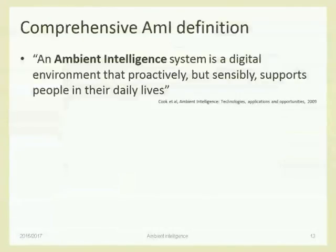I will focus on this very short definition, which I think captures the essence of what we are trying to do. An ambient intelligence system is a digital environment — no doubt we need digital technologies, sensors, actuators, computers, interfaces, mobile devices, and so on — but all of these are for supporting people in their daily lives. It's not technology because technology is good; it's technology because it solves a specific problem or helps users in their work, while traveling, while living, or while enjoying themselves.